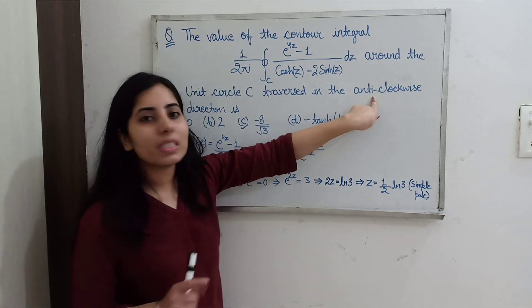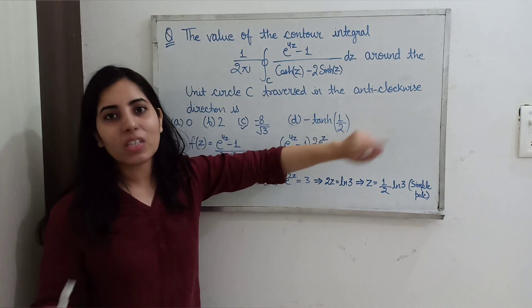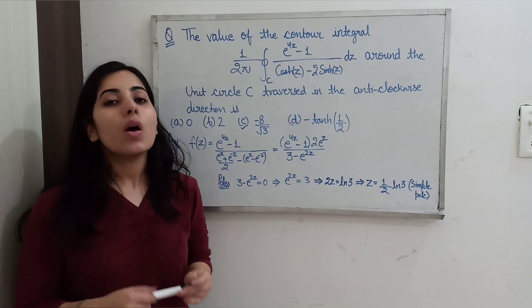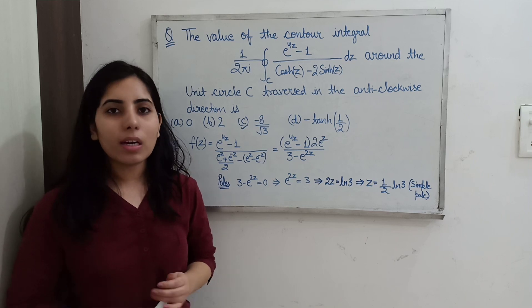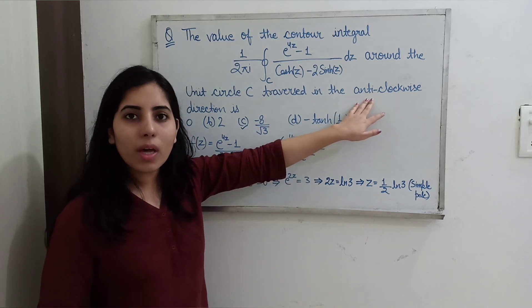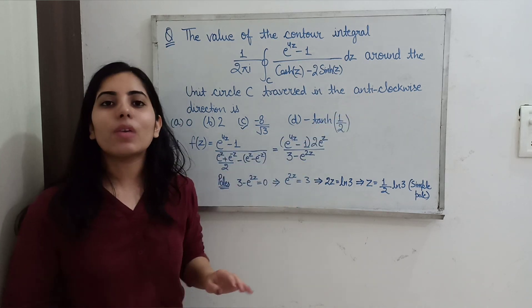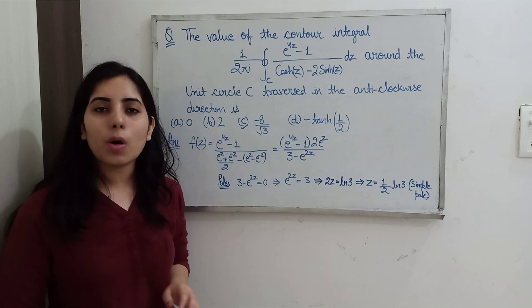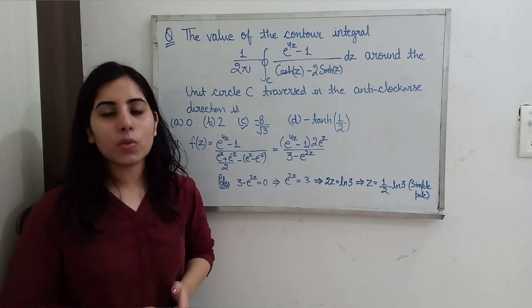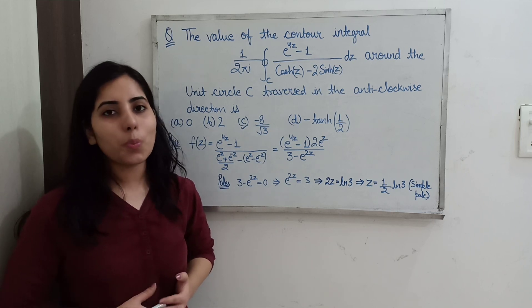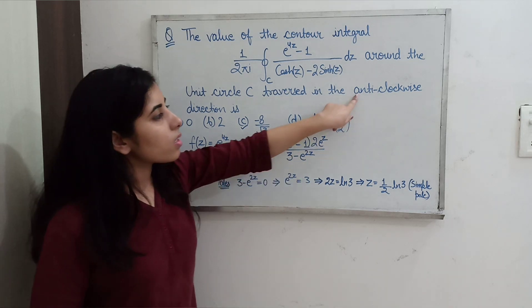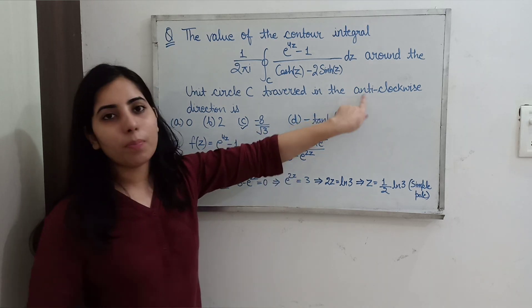If the direction were clockwise, the formula would be minus 2πi times the sum of residues at those poles within the contour. But in this case, since the direction is anti-clockwise, we directly use 2πi times the sum of residues at the poles lying within the contour. This is one very important point.